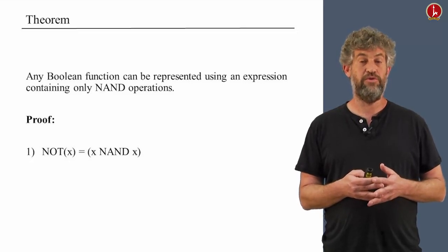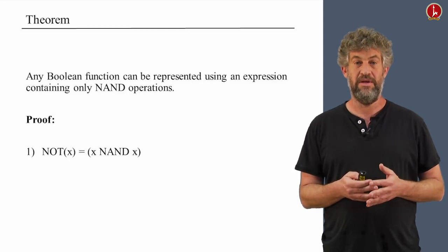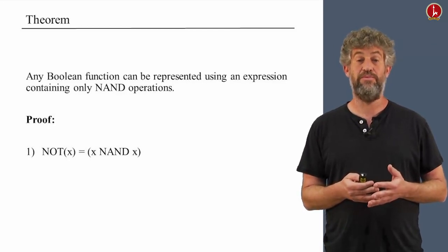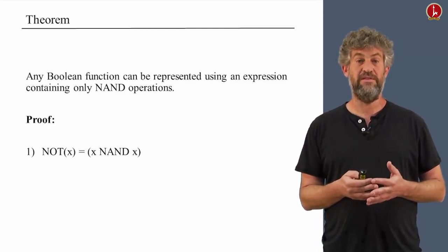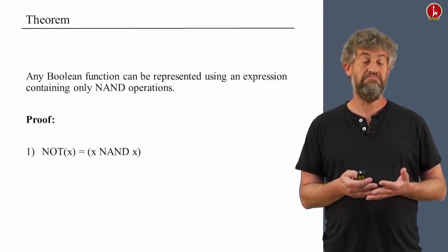So here's how you do NOT. If you just look what happens when you feed x to both inputs of the NAND gate, you plug it into the truth table in the previous slide. And you can see that NOT x is really represented by x NAND x. That's part one.